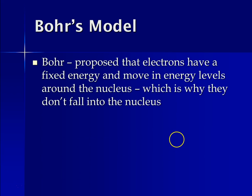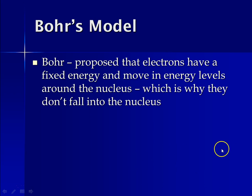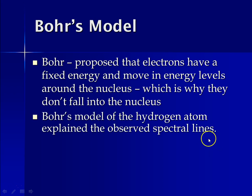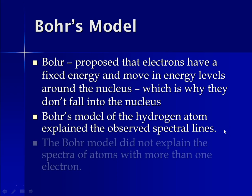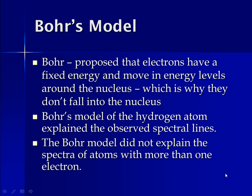The Bohr model proposed that electrons have fixed energy and move in energy levels around the nucleus, which is why they don't fall into the nucleus. Bohr's model of the hydrogen atom successfully explained the observed lines in the hydrogen spectrum. Unfortunately, his model did not explain the spectrum of atoms with more than one electron, because it gets much more complicated with additional electrons.